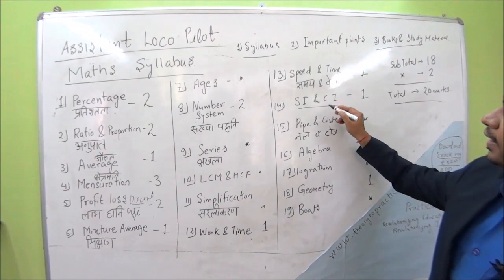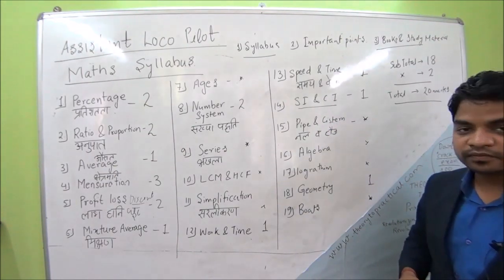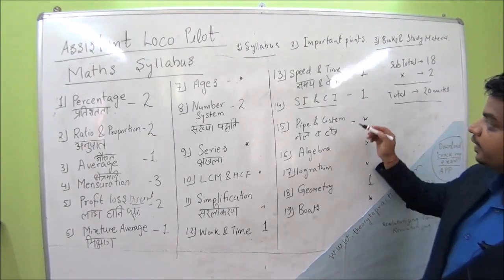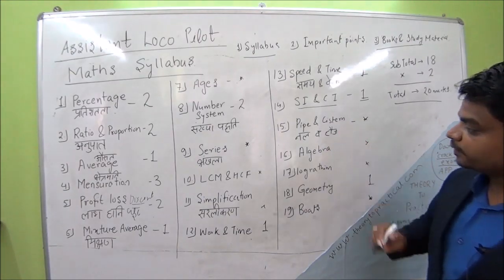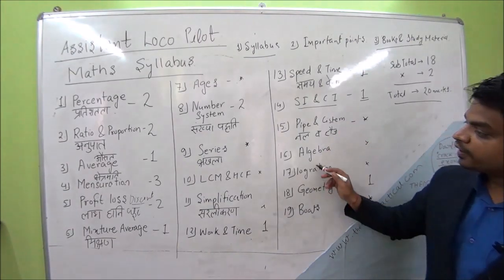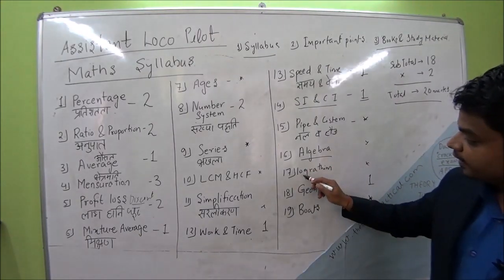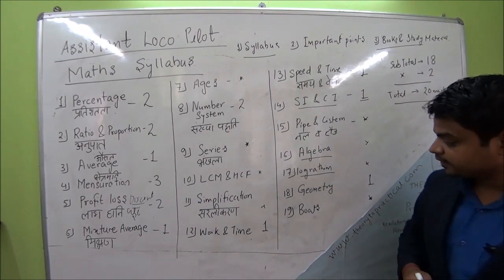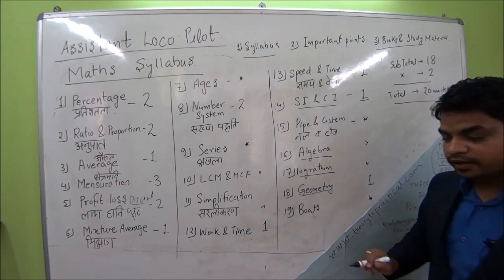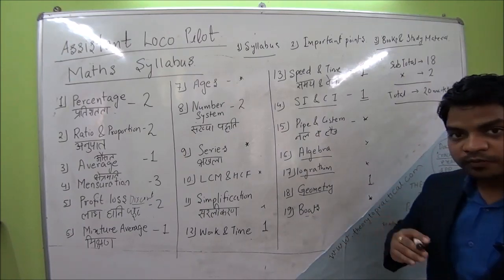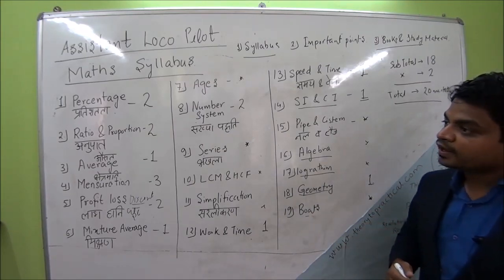Then there is SI and CI — simple interest and compound interest — from which around 1 question comes. Then pipe and cistern, from which questions sometimes appear. Then algebra, from which questions are formed. Then logarithm, from which questions also come sometimes.